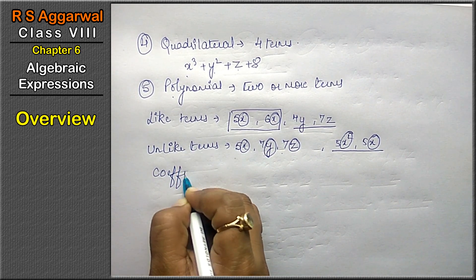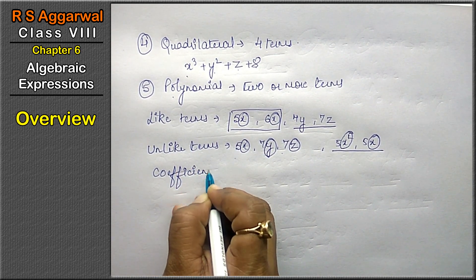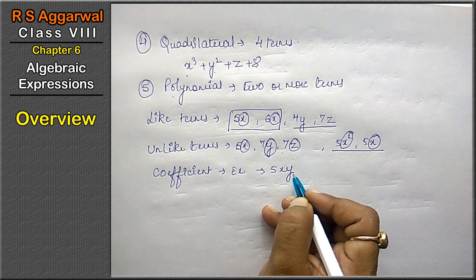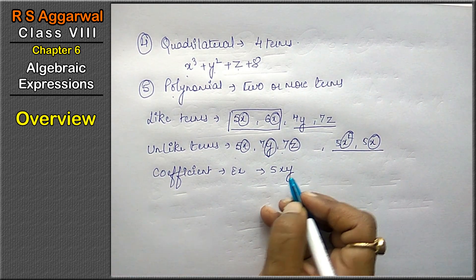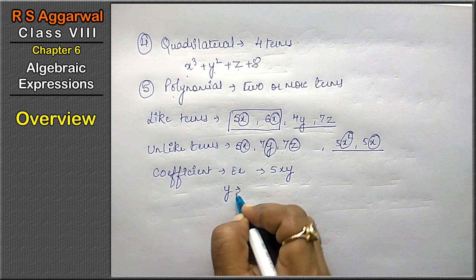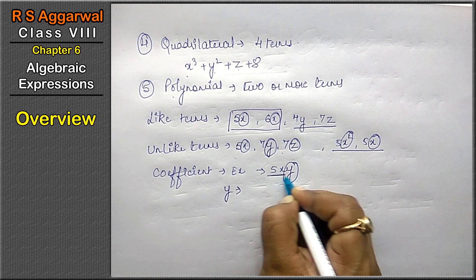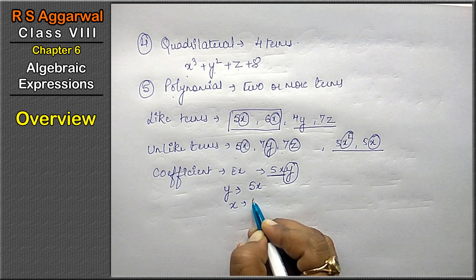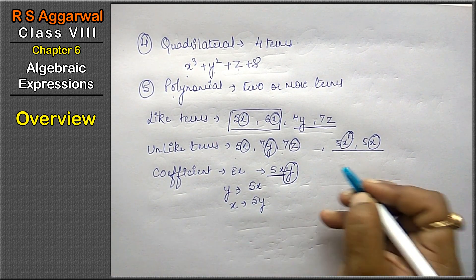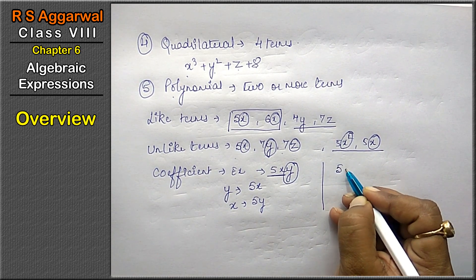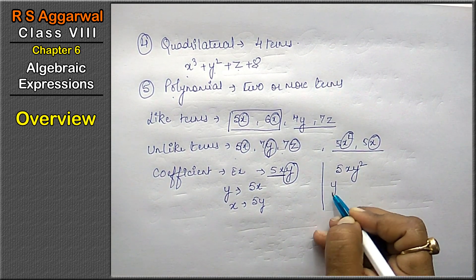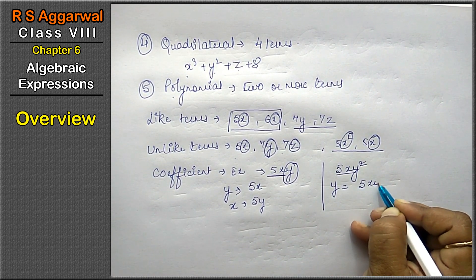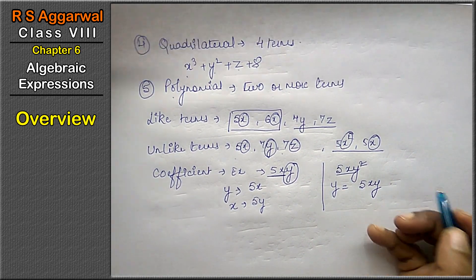Coefficient. What is coefficient? For example, if I give a value 5xy and I ask what is the coefficient of y? Whatever remains after removing y, that will be the coefficient of y. If I ask what is the coefficient of x? 5y is the coefficient of x. For example, if I say 5xy², find the coefficient of y. After canceling one y, what remains, that is the coefficient of y.